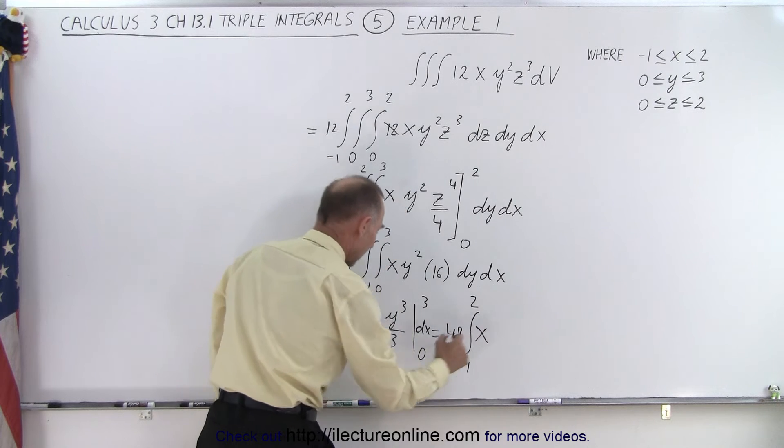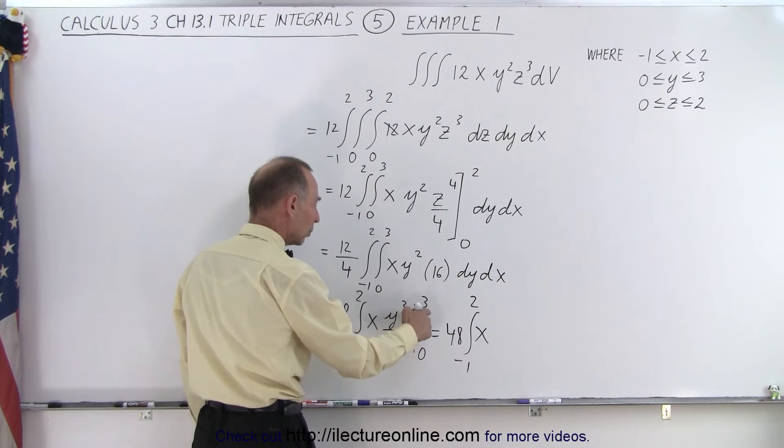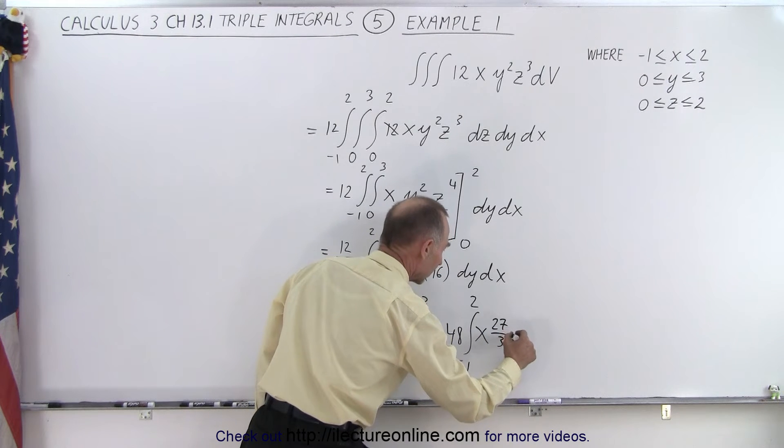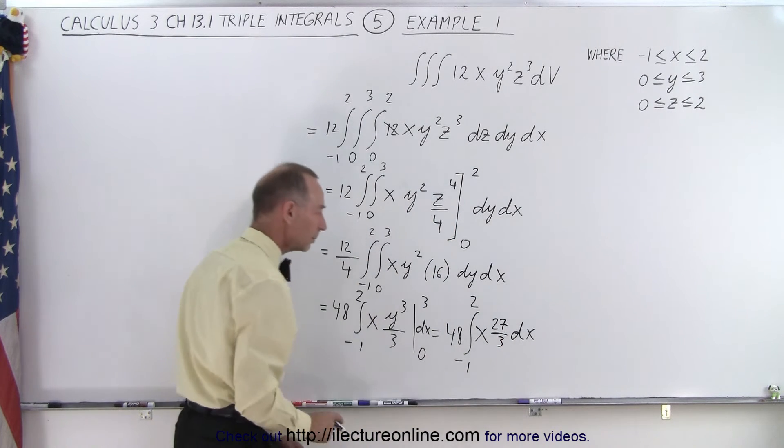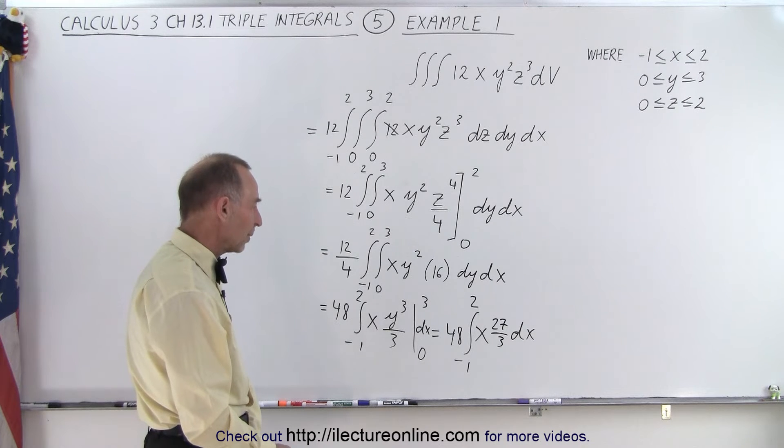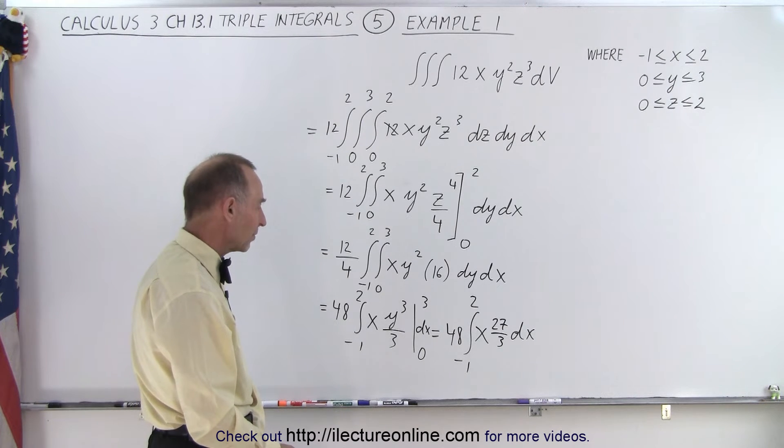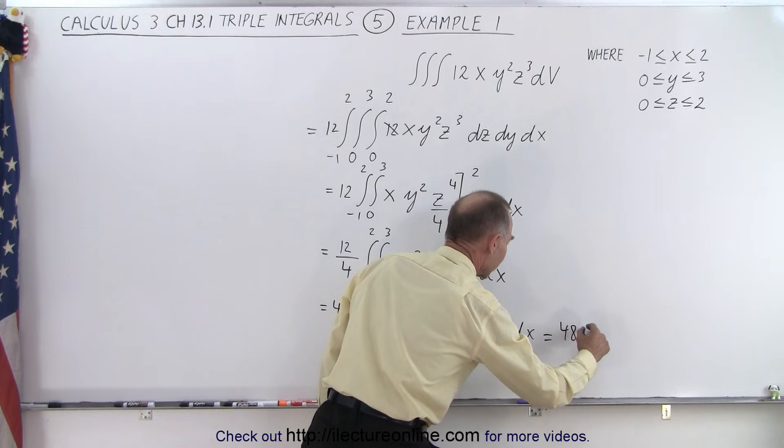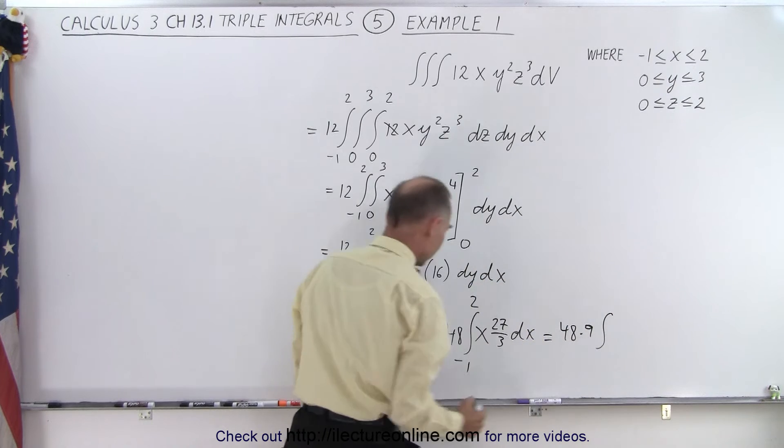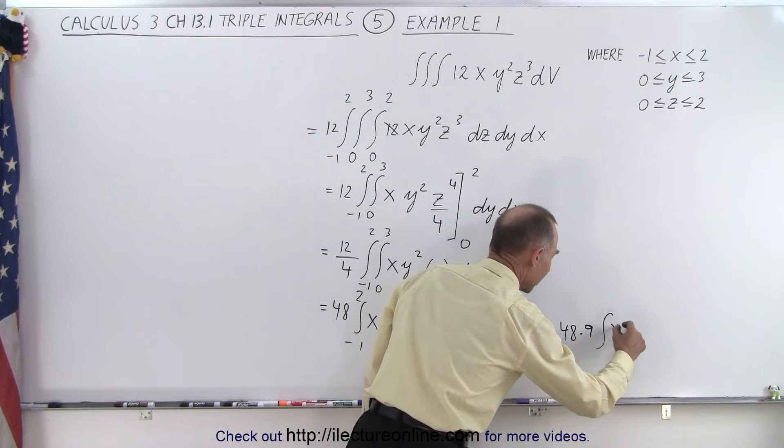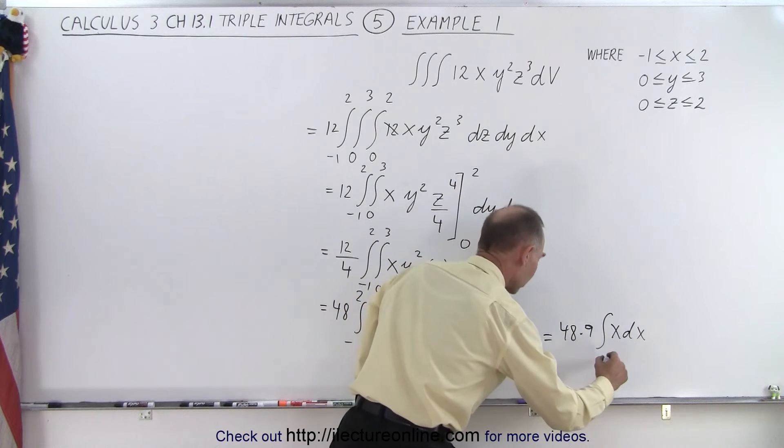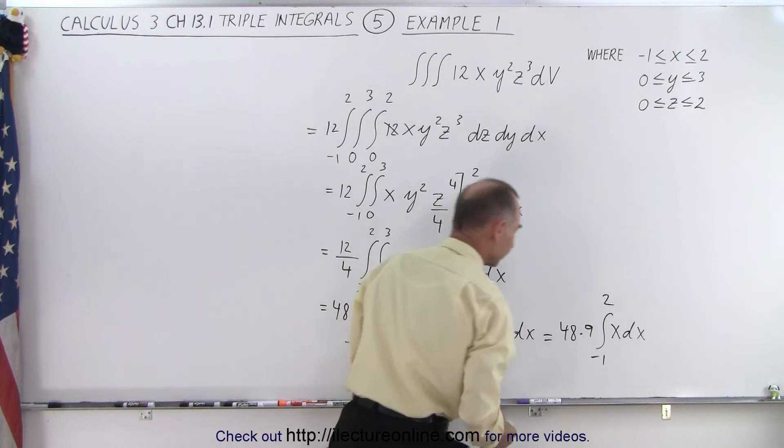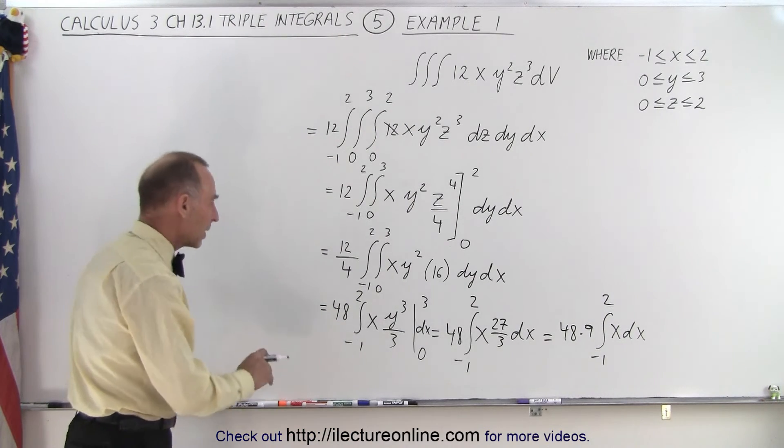So we end up with x and y³, when y becomes 3 that's 3³ which is 27 over 3, dx. And then of course 27 over 3 is 9, 9 times 48. Well let's just write it like this. So this becomes equal to 48 times 9 times integral of x dx from -1 to 2.